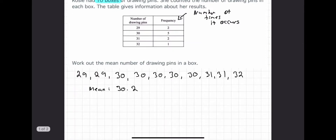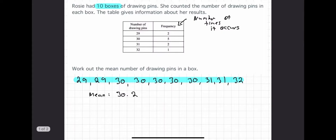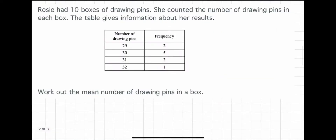This list method is okay for a short list, but when lists become longer it becomes impractical, so we need another way. This new method requires us to draw another column in the table. The variable — in this case number of drawing pins — we call x, and the frequency we call f. The new column is f times x, written as fx.